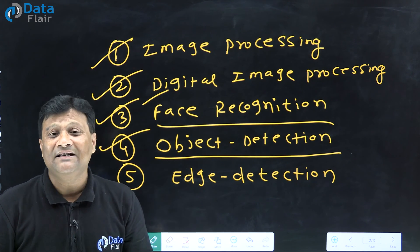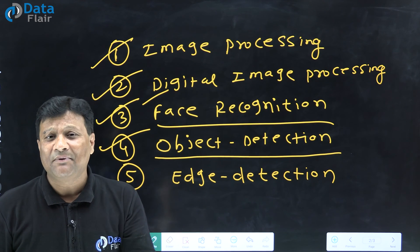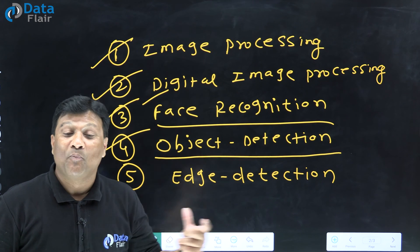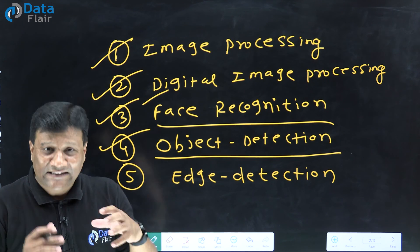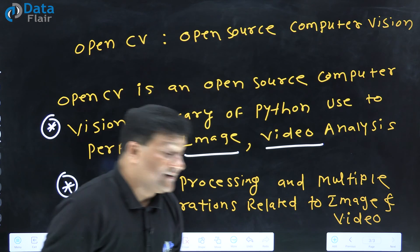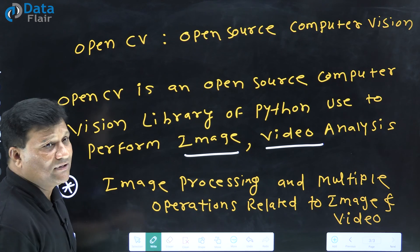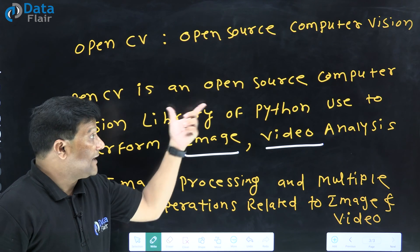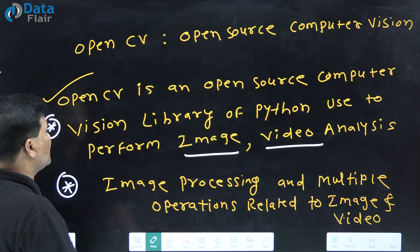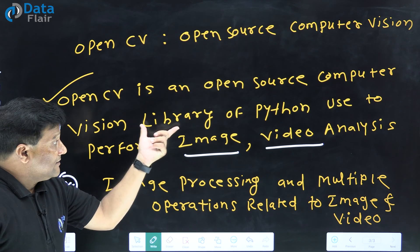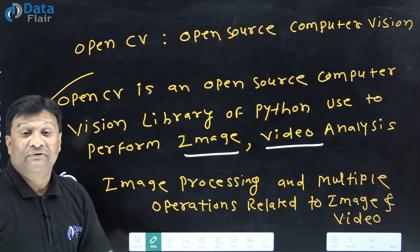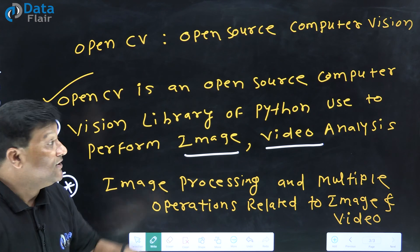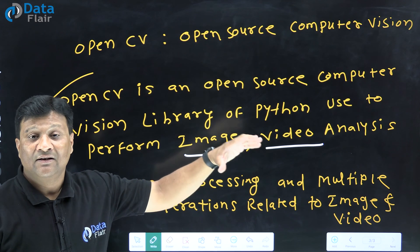In machine learning applications, or in data science and machine learning applications, it can also be an AI application. OpenCV is an open-source computer vision library of Python used to perform image and video analysis. In Python, we can prepare an image or video analysis application, so we will go for this open-source library of Python.